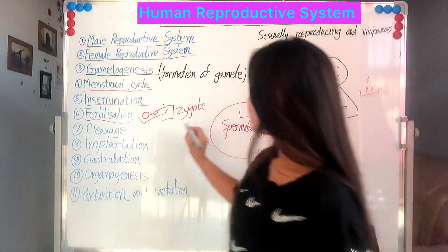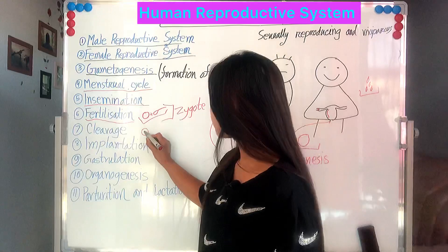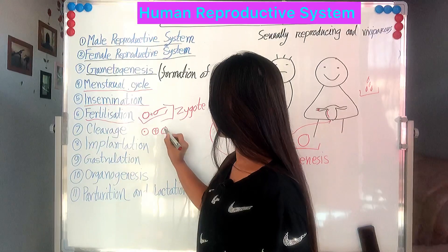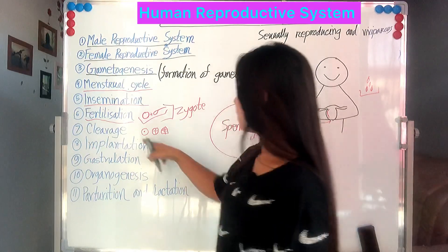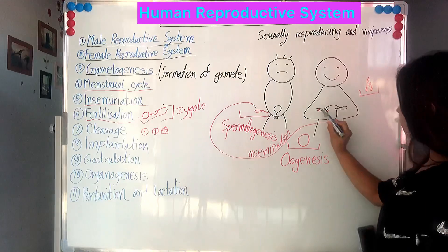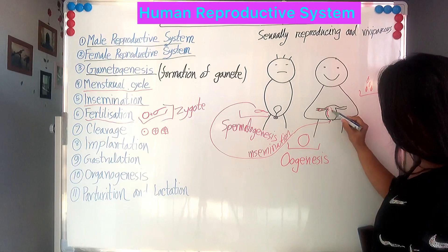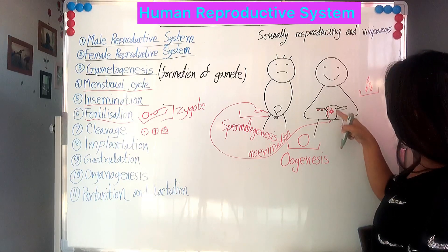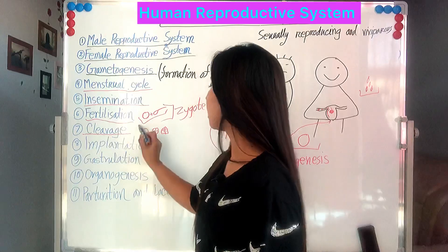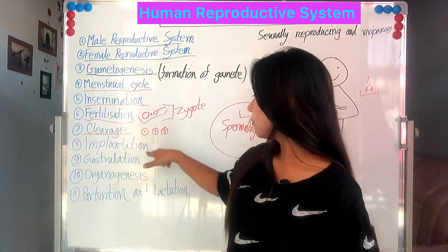This single cell starts dividing. From the fallopian tube, it will come to the uterine cavity. This process is called cleavage, or the division phase.